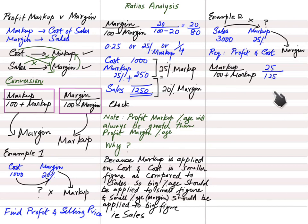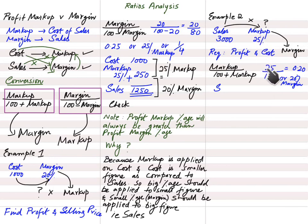The markup is 25%, so: 25 ÷ (100 + 25) = 25 ÷ 125 = 0.20, which means 20%. So margin percentage is 20%. As a check: markup (25%) is higher than margin (20%) — which confirms the conversion is correct, since markup percentage should always be greater than margin percentage.